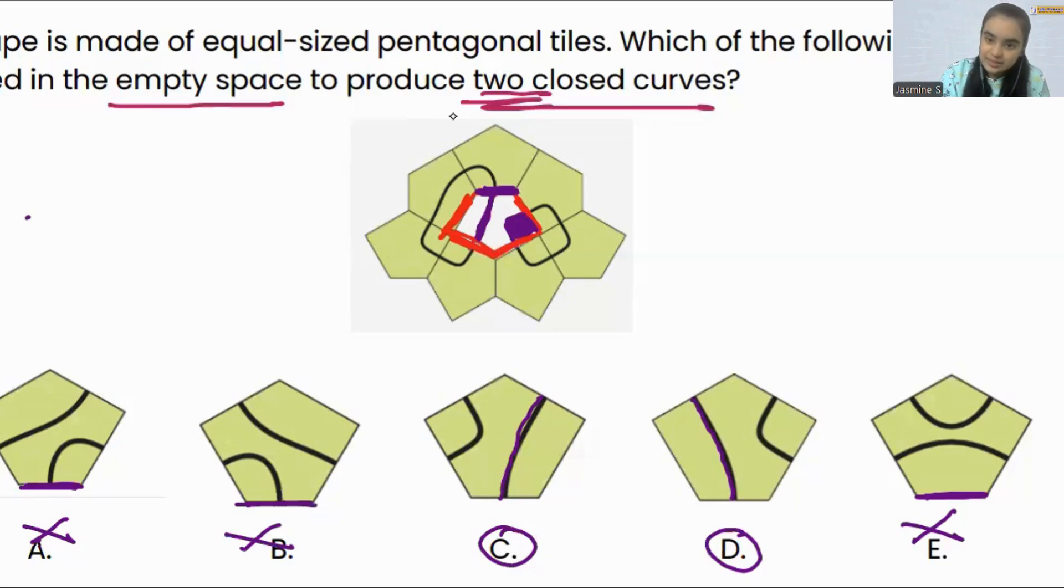Will it be C option or will it be D option? Now, as you can see over here, the tile is placed upside down and the part which we have formed looks like this. Correct? Now, what we have to do here is, we have to find out the mirror image of it first.